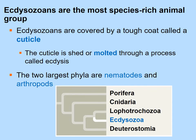The second major group of protostomes is Ecdysozoa. Though relatively small in number of phyla, they contain nearly the most species of any group. What defines Ecdysozoa is a tough outer layer called the cuticle, and they undergo molting — a process called ecdysis — shedding the cuticle as they grow.